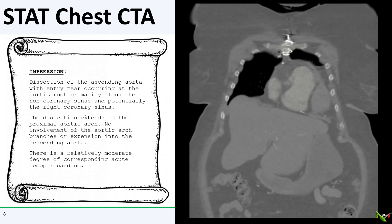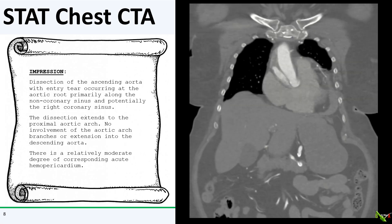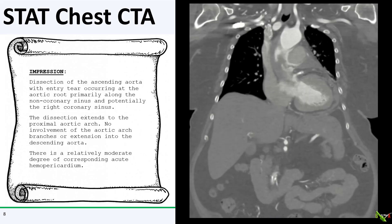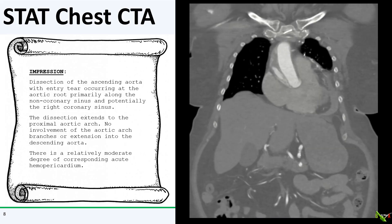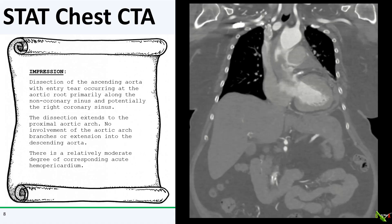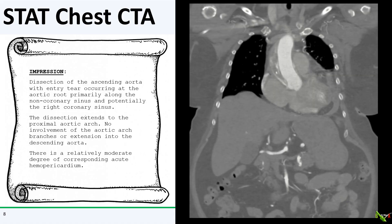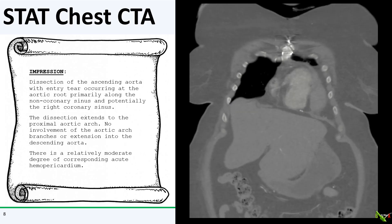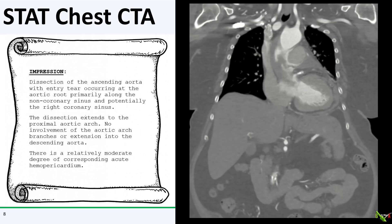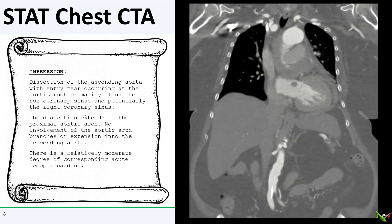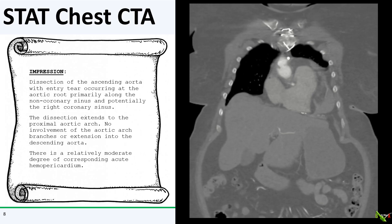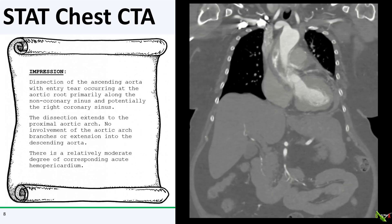We got her down to CT, and things did not look great. The radiologist noted that the dissection of the ascending aorta had an entry tear down at the root, primarily along the non-coronary sinus and potentially in the right coronary sinus. It also looked like there was at least moderate acute hemopericardium from extension of the dissection into the pericardial sac. Fortunately, the dissection stops in the ascending aorta and has not involved the great vessels or the descending aorta.